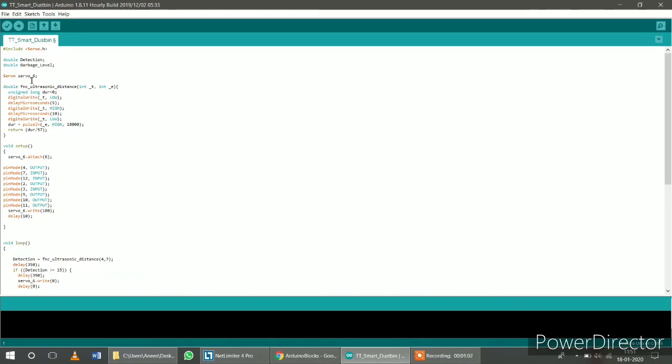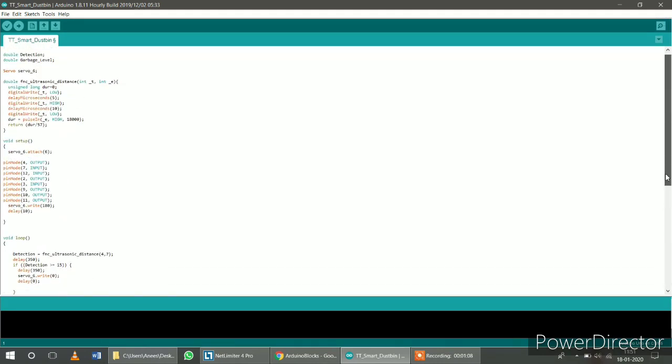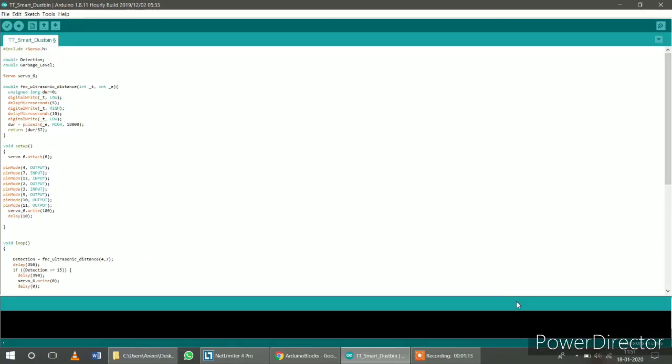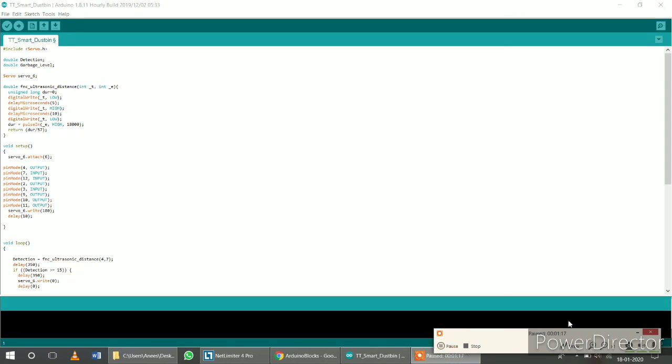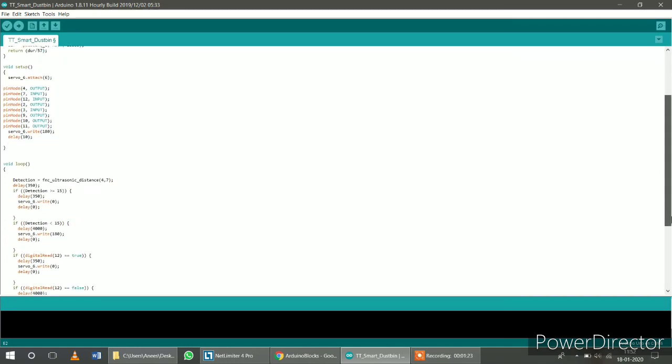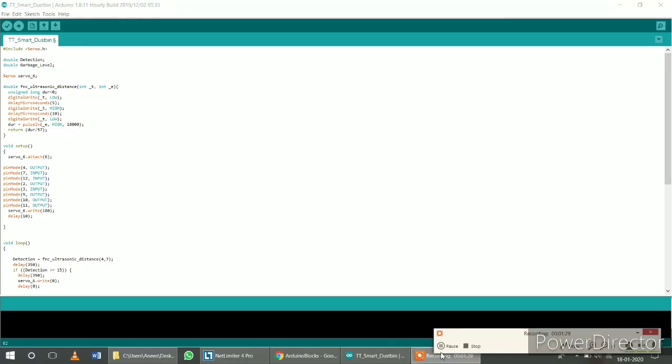The same code we have written in embedded C. You can see the codes on the screen. But the problem is, it will be a little bit difficult for young students to understand these codes. But anyway, we will be providing the link for the program in the description. Please write your kind suggestions and queries in the comment section. We will be happy to reply to your queries. So guys, we are done with our programming part over here.